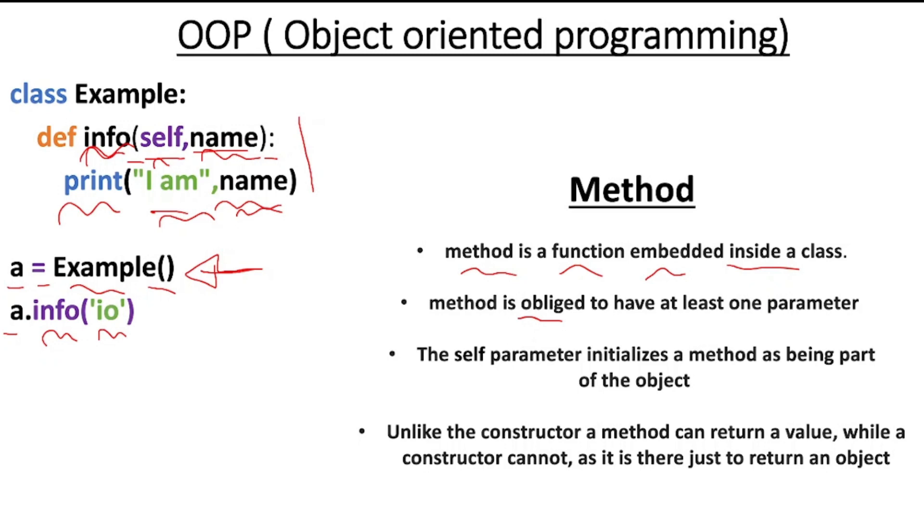The reason why the self parameter initializes a method as being part of the object is that when we have the self parameter placed when the method is created, it means this specific method is part of the object.